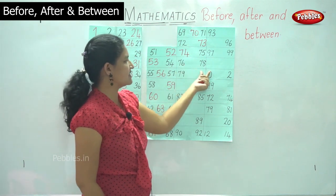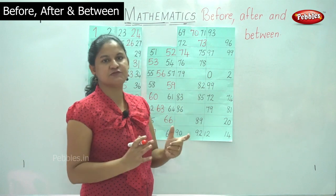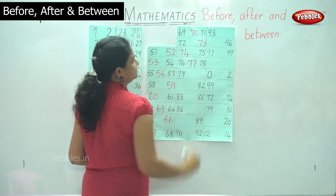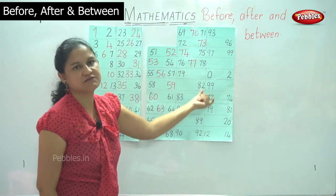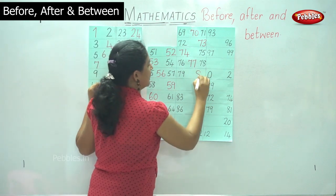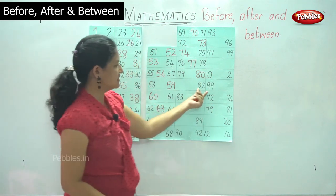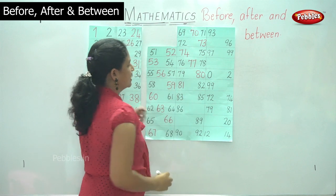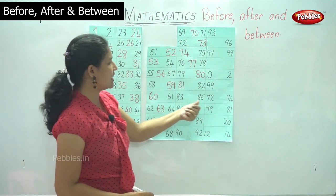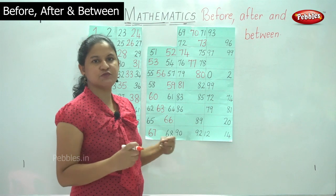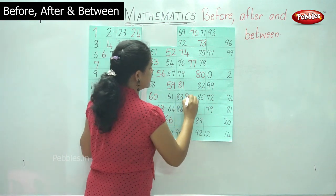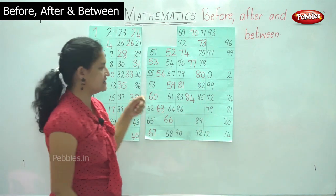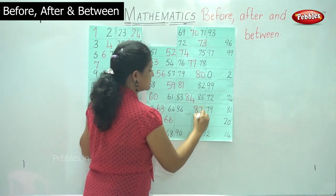Then we have numbers seventy-six and seventy-eight, and we want to know what number comes between these two numbers — it is number seventy-seven. Then we have seventy-nine, and what comes after seventy-nine is number eighty. We have number eighty-two, and what comes before eighty-two is number eighty-one. Then we have numbers eighty-three and eighty-five, and what number comes between them is number eighty-four. We have number eighty-six, and what comes after eighty-six is number eighty-seven.